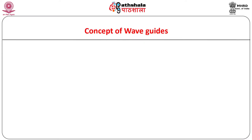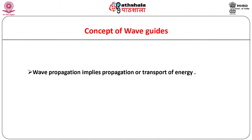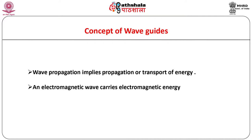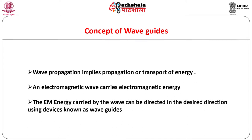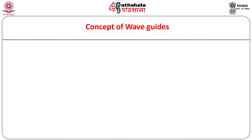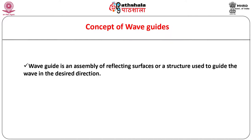We know that wave propagation implies propagation or transport of energy. An electromagnetic wave carries electromagnetic energy which can be used for various useful applications. The electromagnetic energy carried by the wave can be directed in the desired direction using devices known as waveguides. A waveguide is an assembly of reflecting surfaces or a structure used to guide the wave in the desired direction.